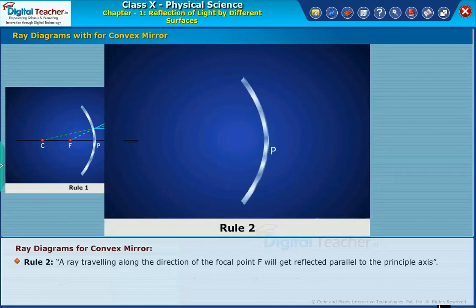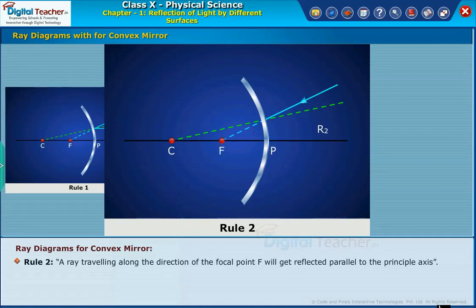Rule two: a ray traveling along the direction of the focal point F will get reflected parallel to the principal axis.